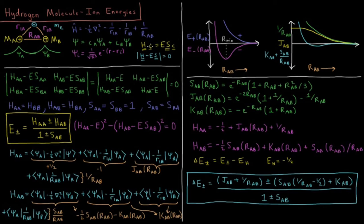We solve for the energies of our system by setting the determinant of the Hamiltonian matrix minus E times the overlap matrix equal to zero. Our trial wave function psi_i for nucleus A and nucleus B is a 1s orbital centered at each nucleus, so psi_i equals one over the square root of pi cubed, times e to the minus (R minus R_i), where each function is centered at the individual nucleus in question.